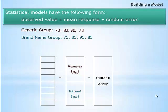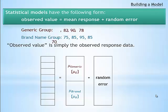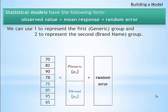Statistical models typically have the following form. There is an observed value that is equal to some mean response or some expected value plus random error. The observed value is simply the observed response data. So we take our observed data and put it into the first column. Now we will take this observed data and break it up into two groups: the true population mean, the mean response, and the random error.